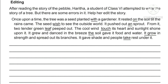Once upon a time, the tree was a seed planted with a gardener. It rested on the soil till the rain came. The seed wished to see the outside world. It pushed out and sprouted. From it, two tender green leaves peeped out. The cool wind touched its heart and sunlight shone upon it. It grew and danced in the breeze. The soil gave it food and water.